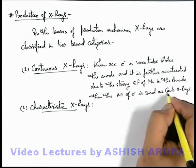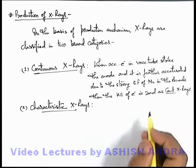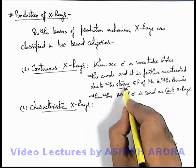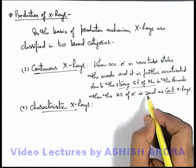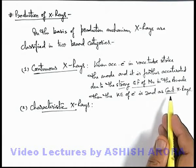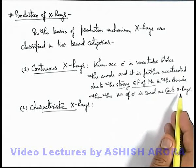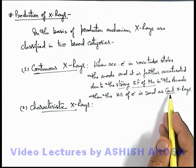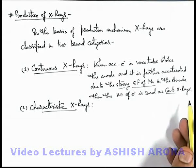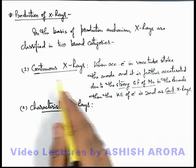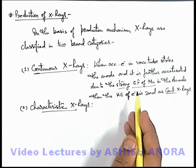These are called continuous X-rays because the spectrum of the X-rays which are emitted due to the strong electric field of the nucleus is continuous. Or we can say that the wavelengths emitted of these X-rays are varying from a very low value to a very high value. That's why the spectrum is continuous, and due to this, such X-rays are called continuous X-rays.